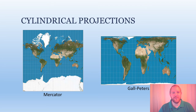It appears as though Greenland is about the same size as Africa, when in reality it would fit inside the Sahara. The Gall-Peters projection fixes the size distortion, but distorts the shapes of the land masses.